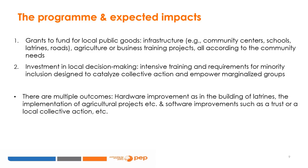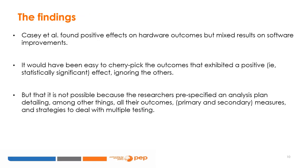The second is about investing in local decision-making through intensive training for minority inclusion, the fostering of collective action, and the empowerment of marginalized groups. This naturally led researchers to evaluate the impact of GOPIFO on multiple outcomes broadly categorized as hardware improvements — like the building of latrines or implementation of an agricultural project — and software improvements, such as trust or local collective action. The researchers designed and implemented a randomized control trial, RCT, to identify the causal effects of GOPIFO. Casey et al. found positive effects on hardware outcomes, but mixed results on software improvements. It would have been easy to cherry-pick the outcomes that exhibited a positive effect, ignoring the others.